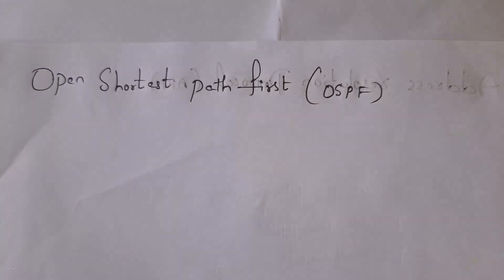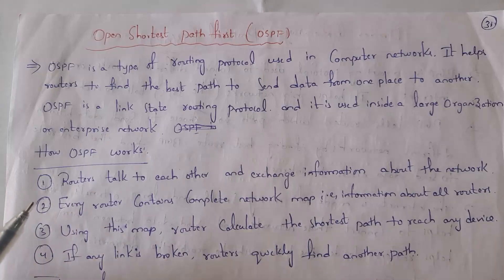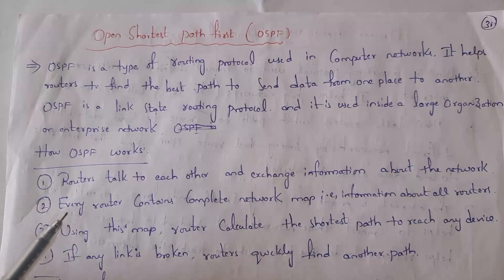Let's get started. OSPF is a type of routing protocol used in computer networks. Within this protocol, routers will find the best route to send data from one place to another. OSPF is a link state routing protocol and is used in large organizations and enterprise networks.